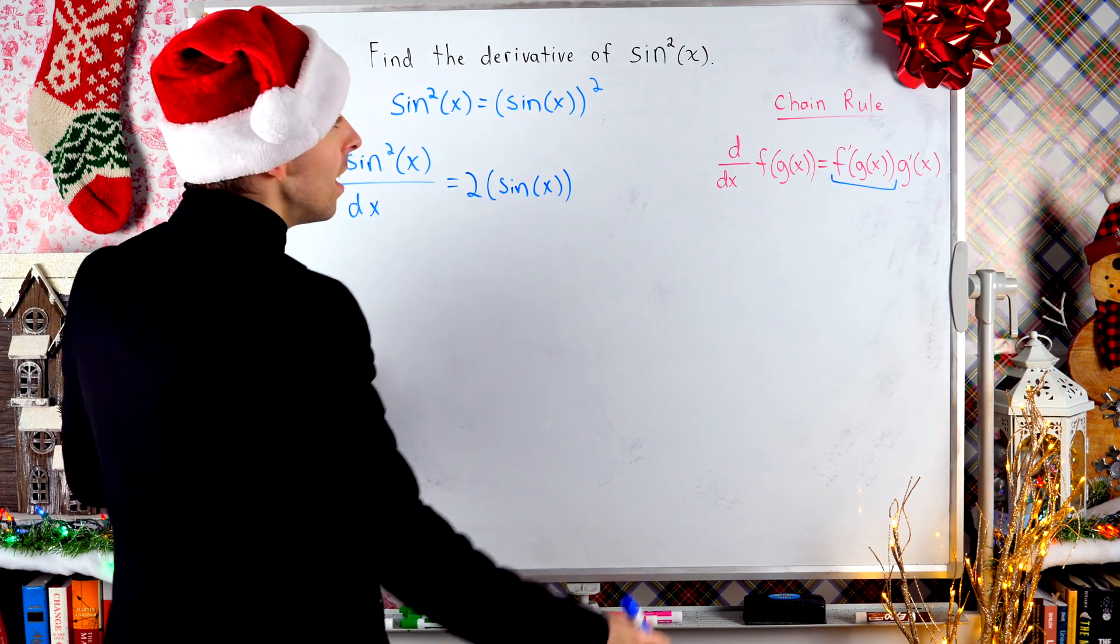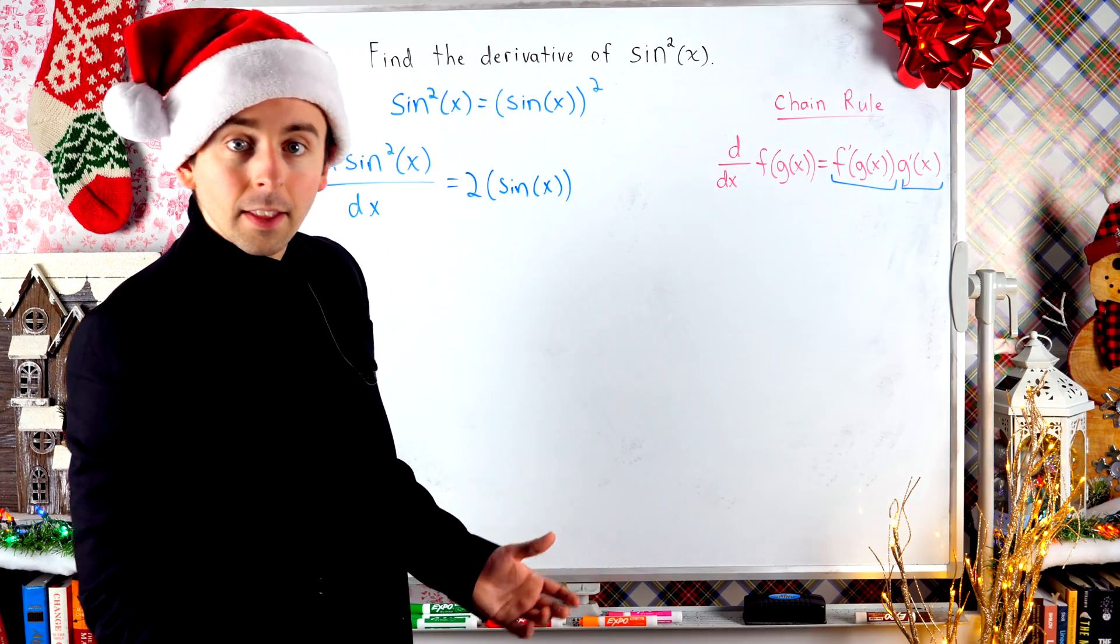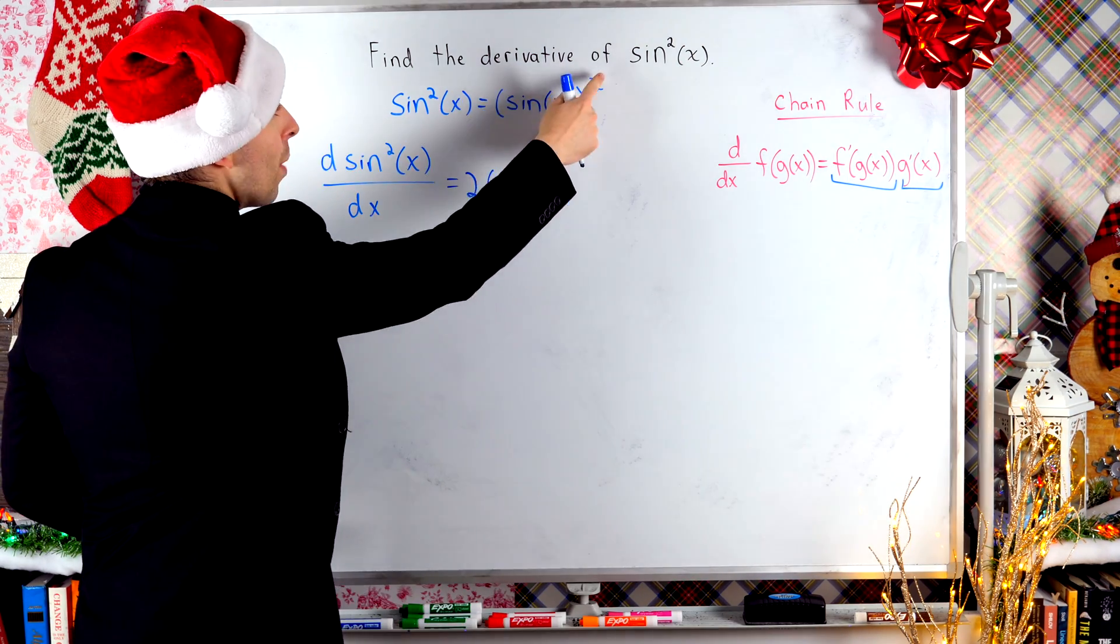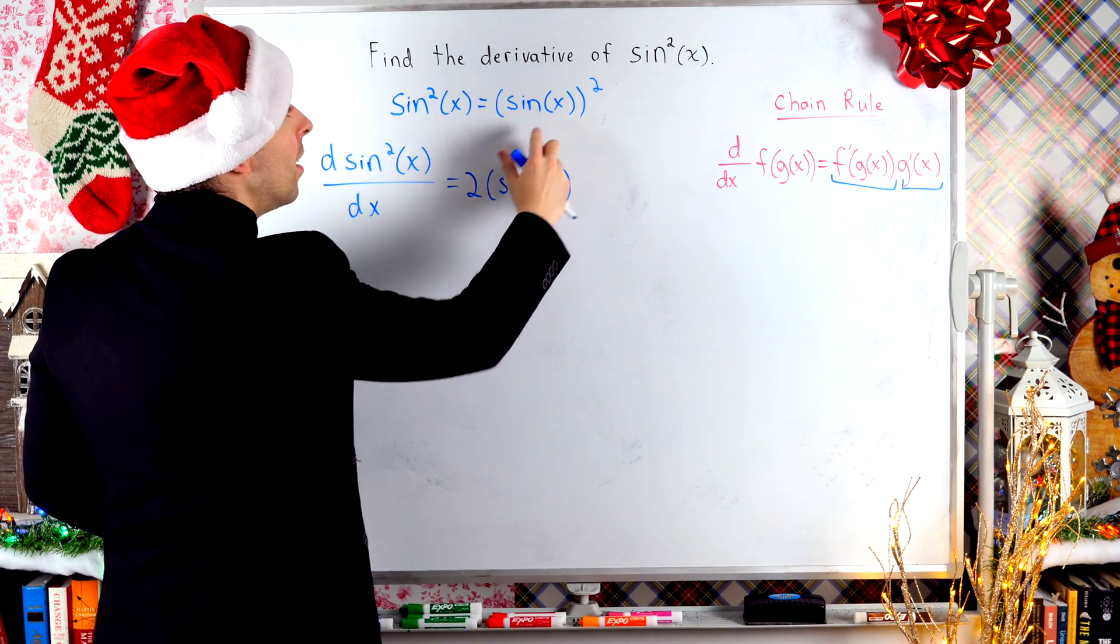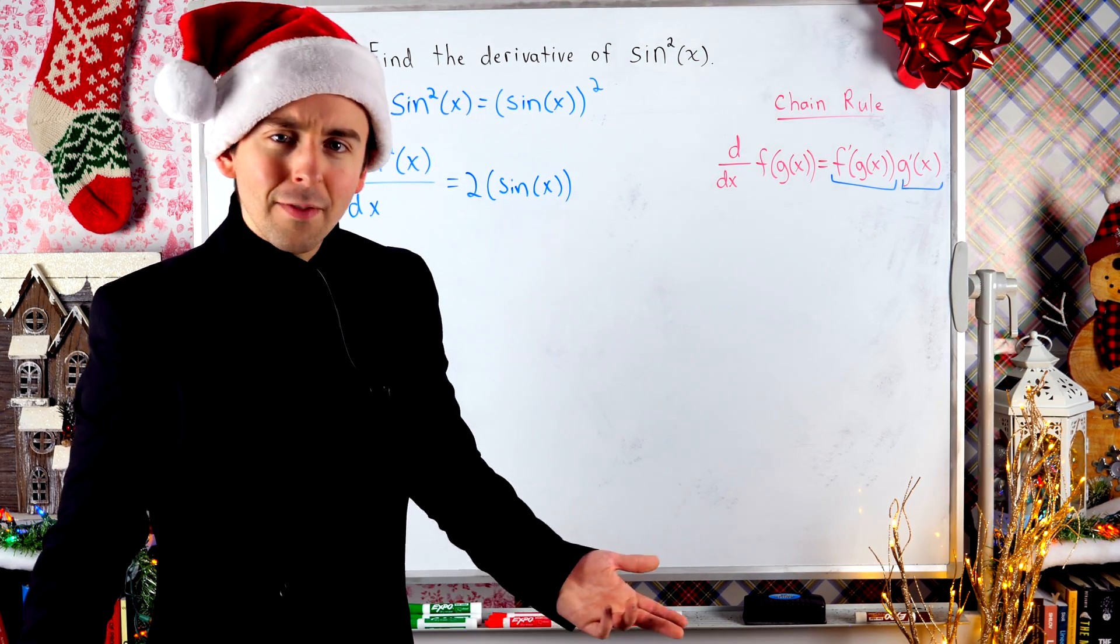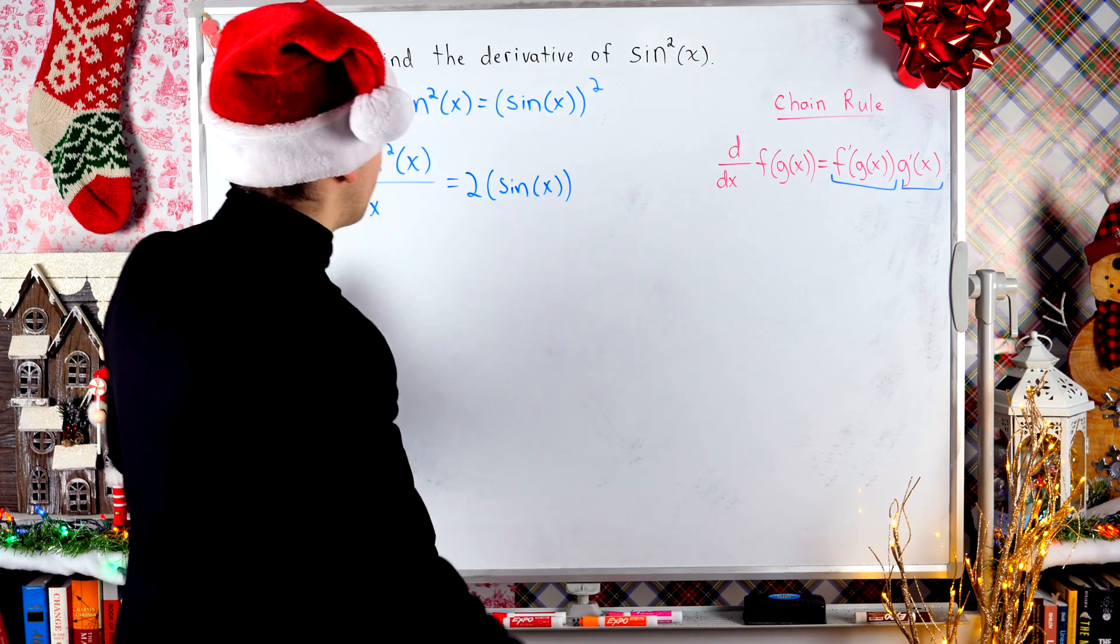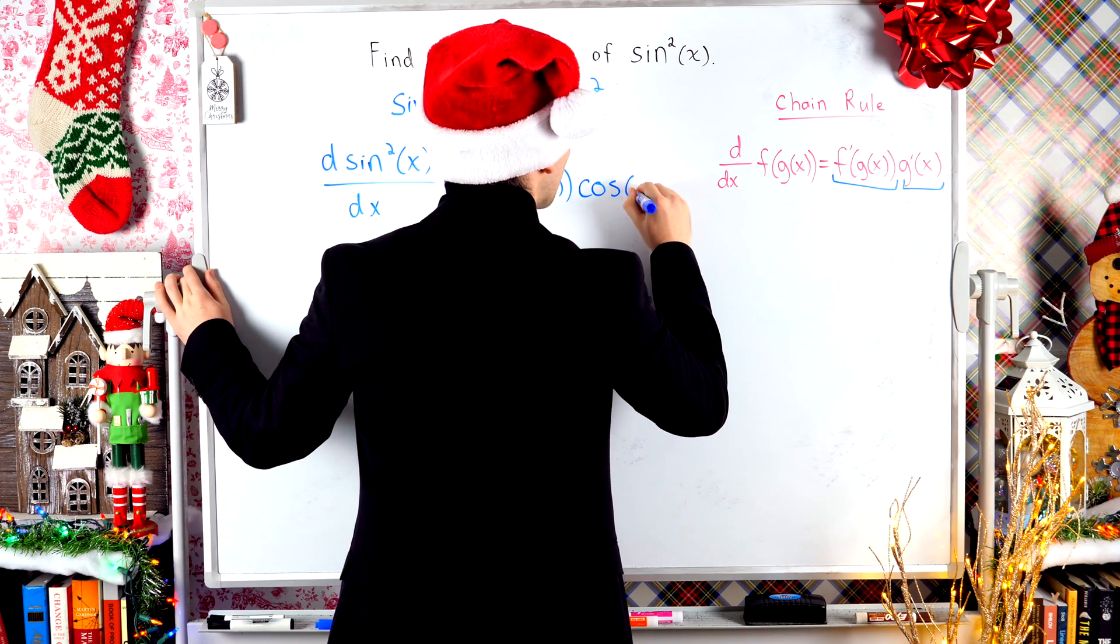The only part that's left is multiplying by the derivative of the inside function. The outside function was a thing squared. So the inside function is just sine of x. Just got to multiply by the derivative of sine of x. What's the derivative of sine of x? That, of course, is cosine of x.